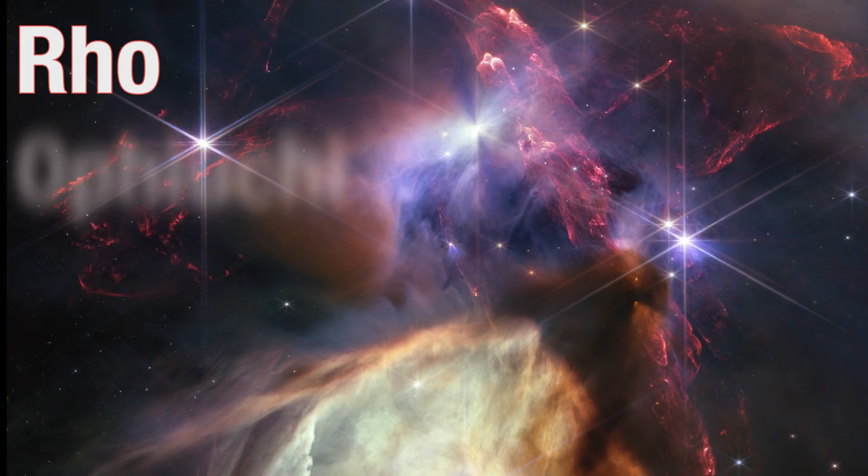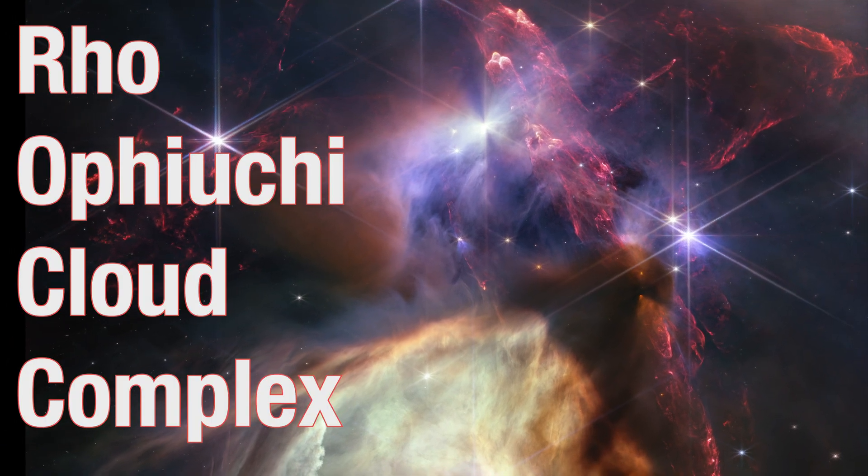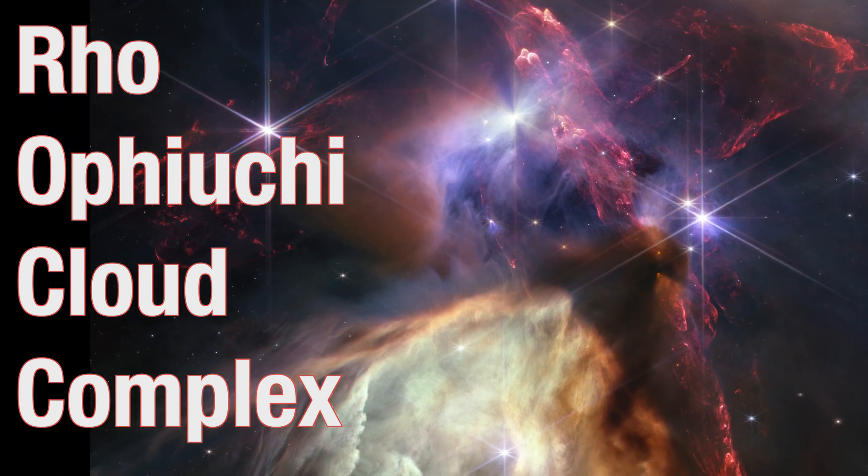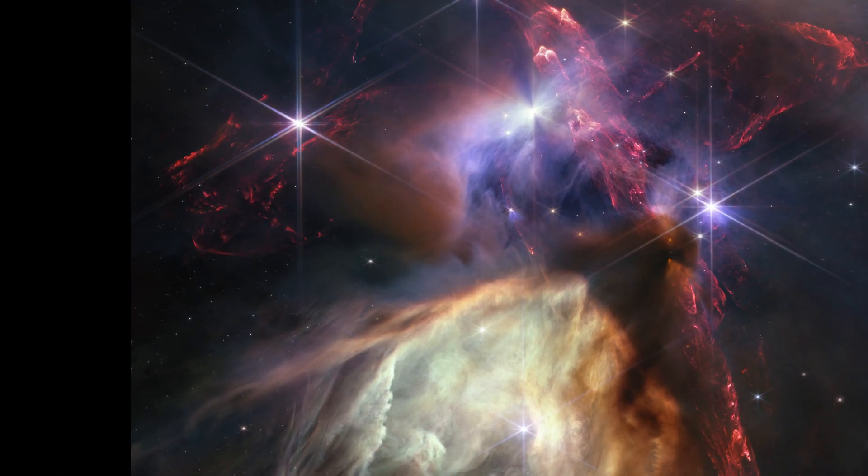The Ro Ophiuki Cloud Complex, a small star-forming region, is located 390 light-years away, the closest star-forming region to Earth.